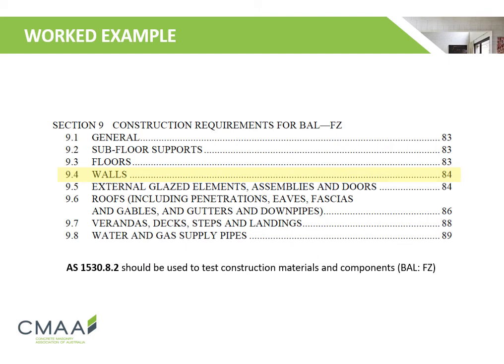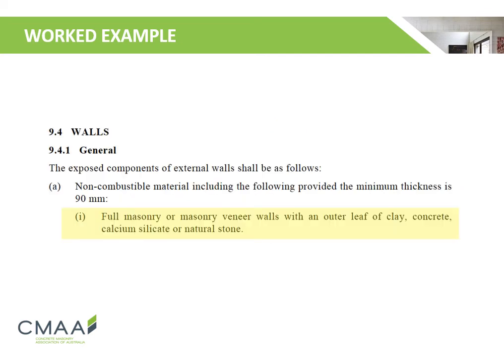Here is the list of all the building elements that must meet specific construction requirements. As the bushfire attack level is determined to be flame zone, all building elements shall be tested in accordance with AS1530.8.2. In Section 9.4 of AS3959, full masonry or masonry veneer walls are recommended for exposed components of external walls, due to masonry's non-combustible nature and excellent insulation properties.